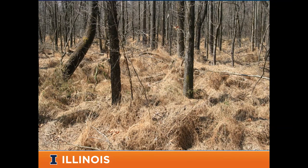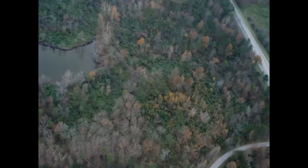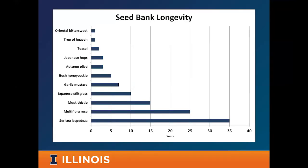Japanese stiltgrass can respond to canopy damage from an ice storm and really take off after extra light comes in. Bush honeysuckle similarly responds to wind storms opening the canopy — pretty much everything green you see in the center of a picture after such an event can be bush honeysuckle or Japanese honeysuckle. Many invasives can persist in the seed bank for a long time. Species like sericea lespedeza, thistles, and multiflora rose can have quite long-lived seed banks, so once established we have to deal with them for often a long time.